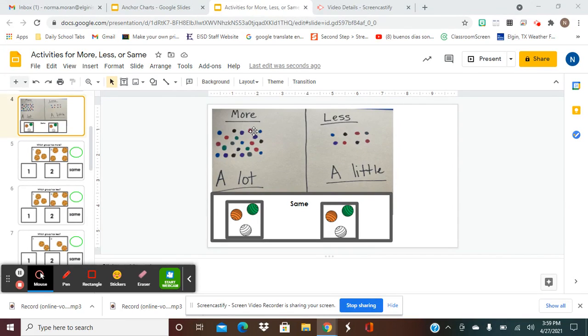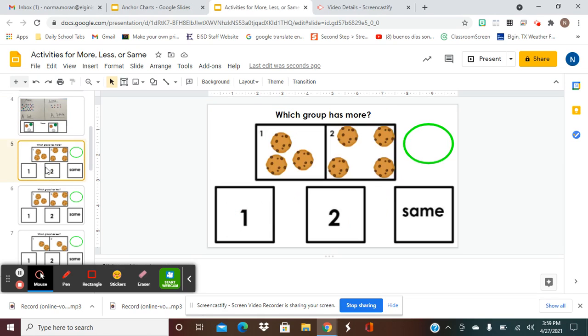Just remember, more is when the group has a lot or the most, and less is when the group has a little bit. And the same is when both of them have the same amount. So if this one has three, this one has three, they're both the same, okay? So our activities are going to look very similar to yesterday's activities in the homework, except that today we're going to be using cookies instead of candy.